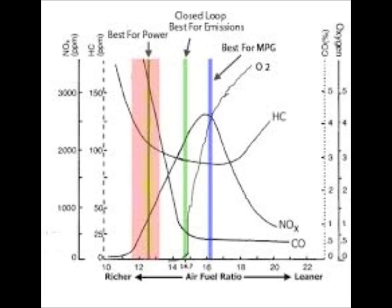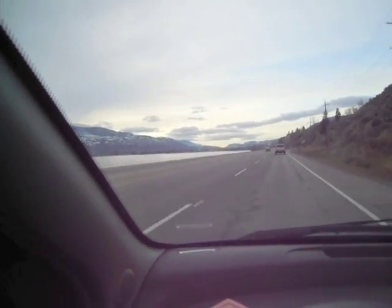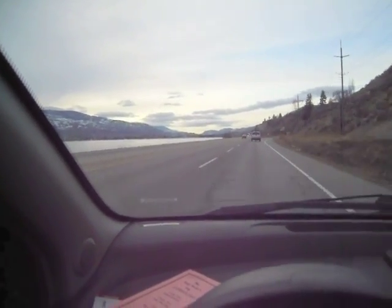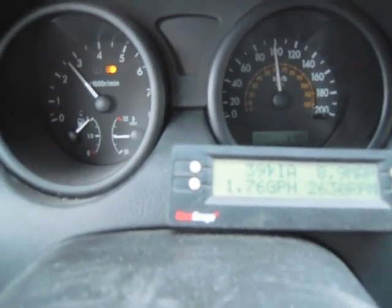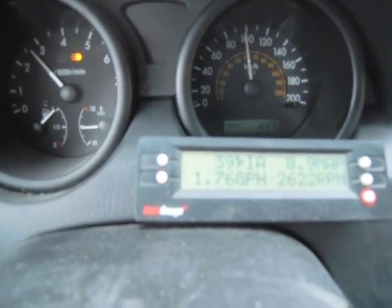Let's take my wife's Aveo out for a test drive and collect some actual data. It looks like pretty much no wind out there. We have 8.9 MAPs, 2630 RPM, 1.76 gallons per hour, 39 degrees intake air, at exactly 60 miles per hour.